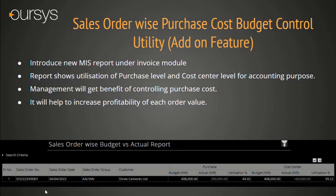In the MIS module, we have added a new report as Sales Order-wise Budget and Actual Report. Here you can see the system showing purchase and cost center budget comparison for each sales order level.